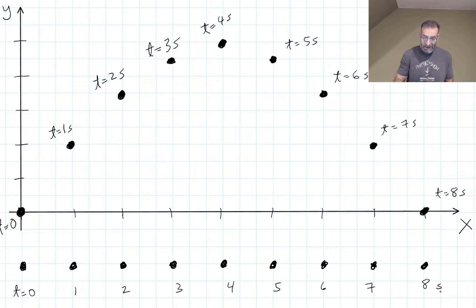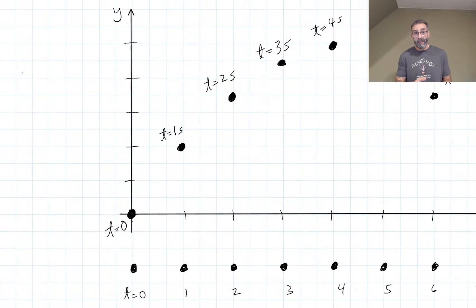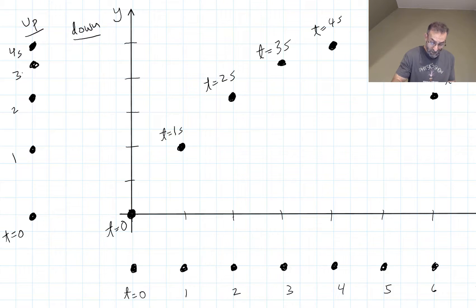If we project this motion diagram onto the y axis, we get this. This is on the way up. And then on the way down, I'm going to repeat t equals four, five, and at eight seconds, it's back on the ground again.